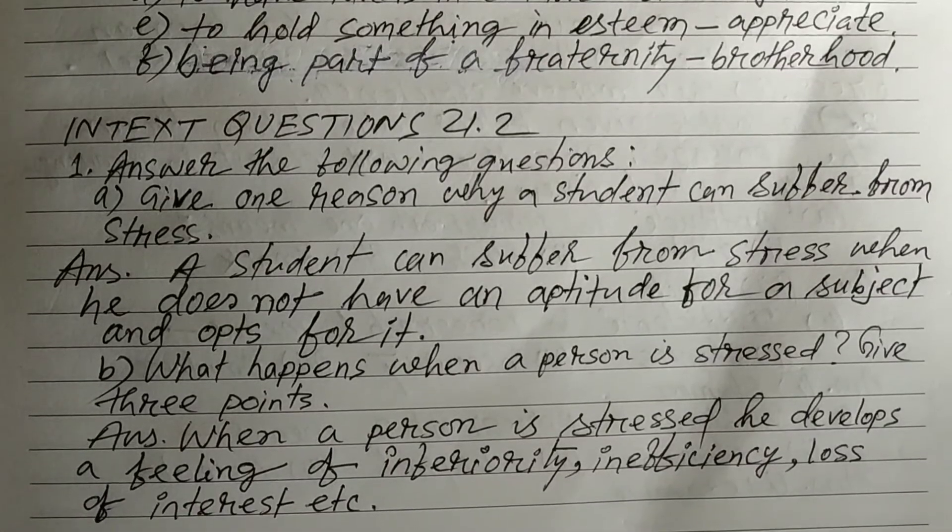Question 2: The words given below are taken from the passage. Pick the word closest in meaning. A) 'Aptitude' in paragraph one means — answer: flair. B) 'Diffidence' in paragraph one means — answer: shyness. C) 'Analyzed' in paragraph two means — answer: examine. D) 'Accomplished' in paragraph three means — answer: complete.